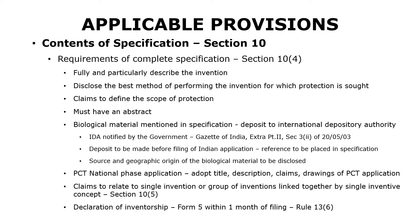Section 10(4) further provides the requirements for a complete specification. It should fully and particularly describe the invention, explain the invention to any person reading the specification, and disclose the best method of performing the invention for which protection is being sought. The specification should not be vague about how the invention would have to be worked. There should be claims which define the scope of protection available — claims being the most important part of a complete specification. The complete specification should also have an abstract.